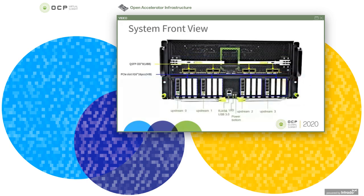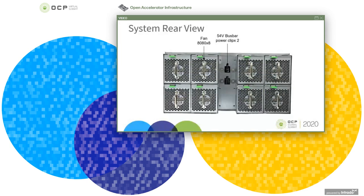The system front view shows 8 QSFP-DD connectors on the UBB. On the HIB side, there are up to 4 PCIe slots for upstream, remaining PCIe slots for flexible IO, 1 RJ45 BMC dedicated LAN, 1 USB 3.0 for the OCP debug card, and also the UID and power button. The system rear view shows 8 fans and 2 54V bus bar power clips in the middle.